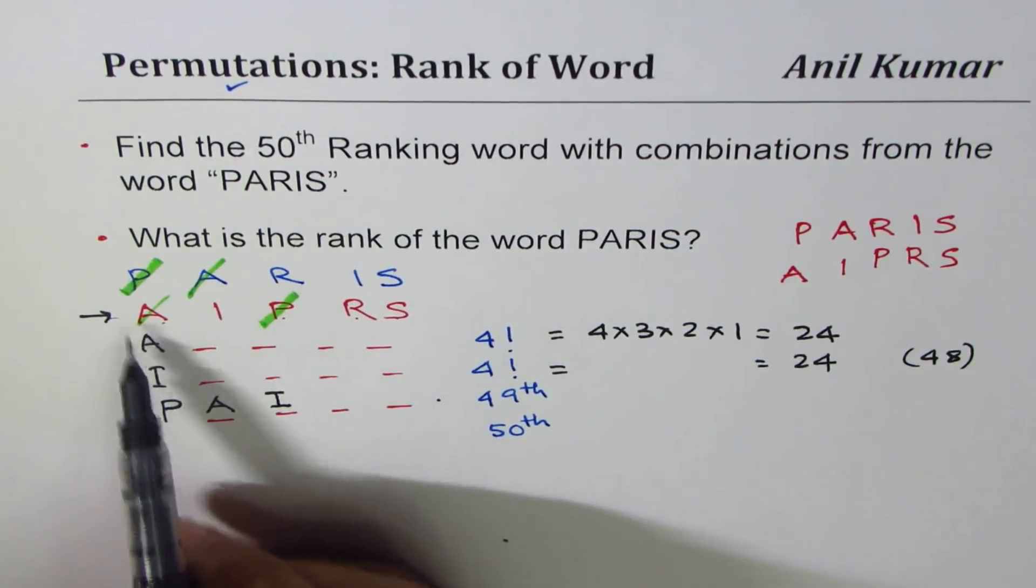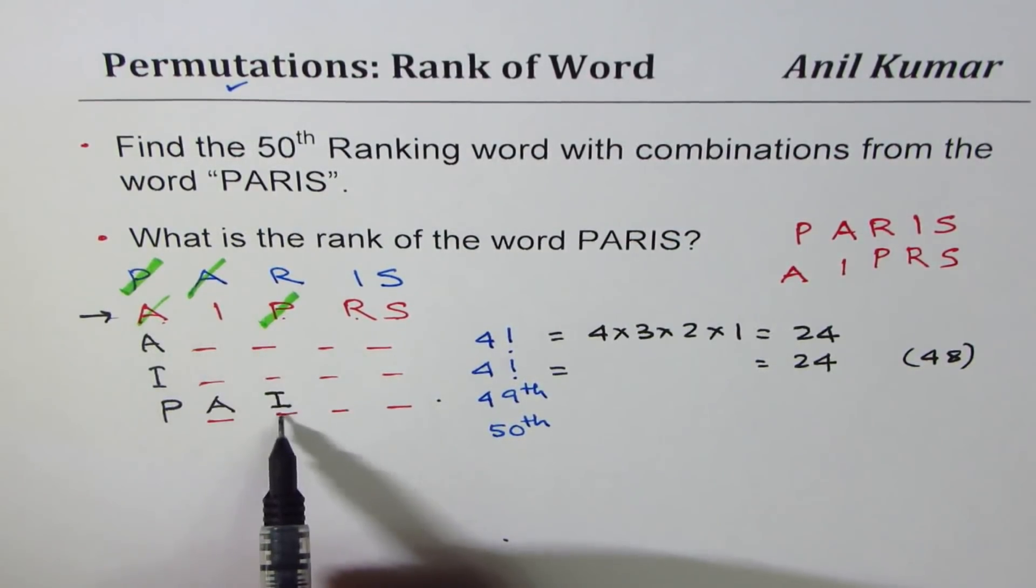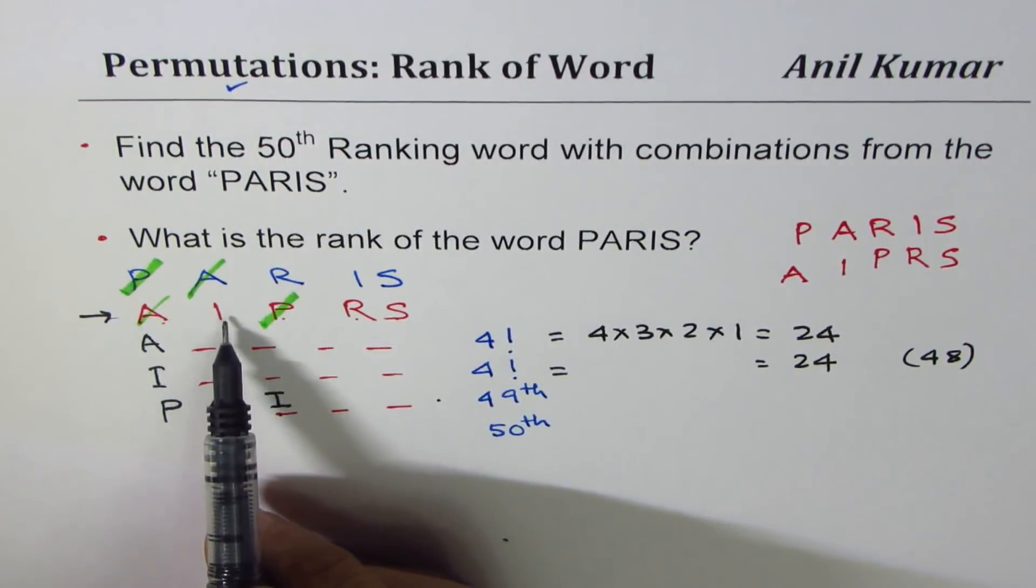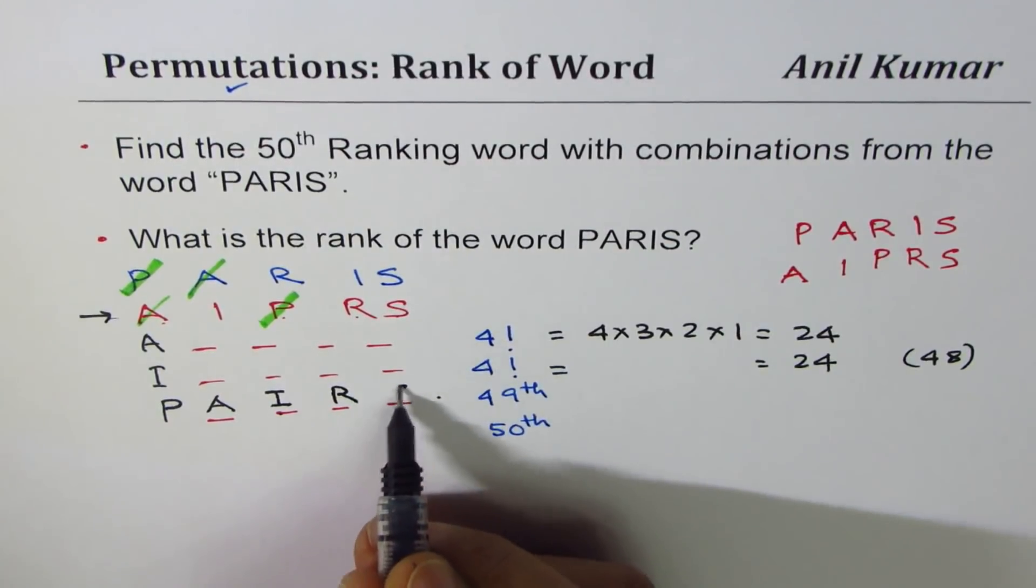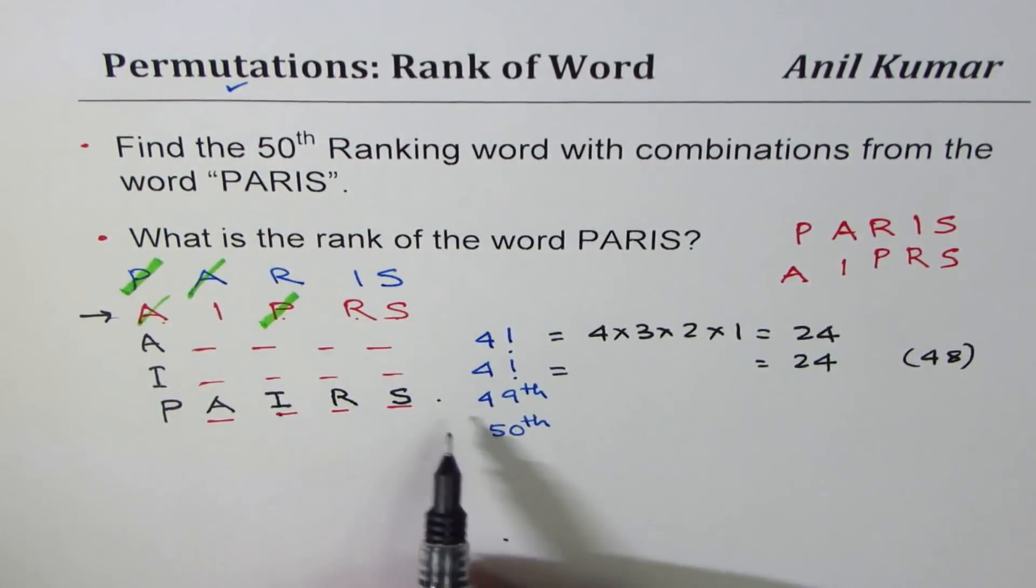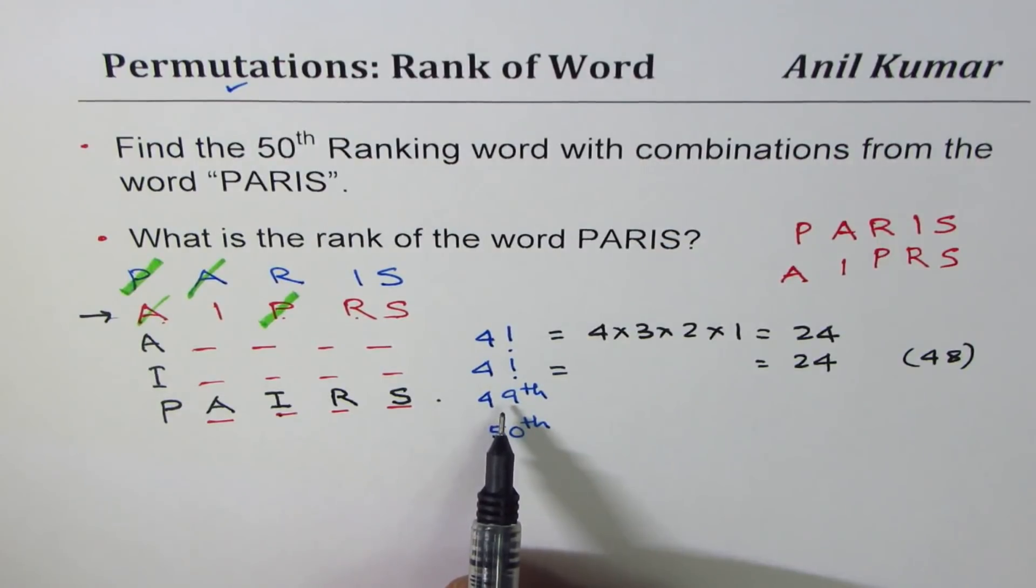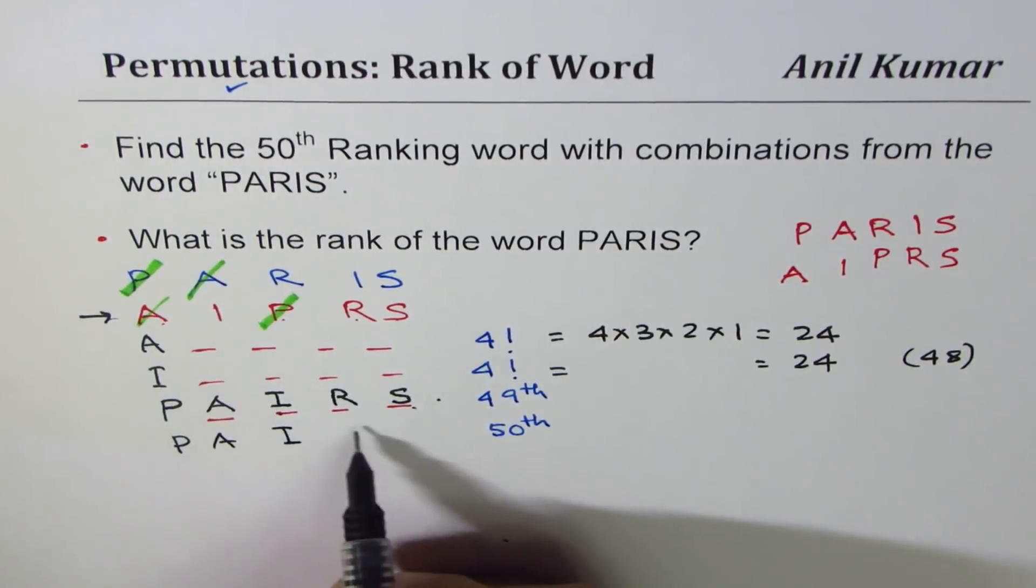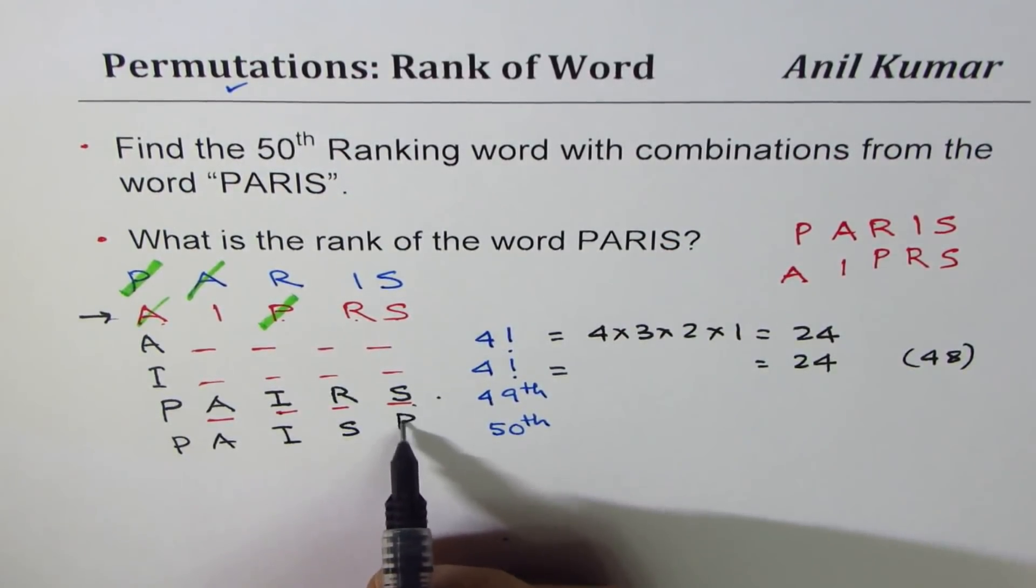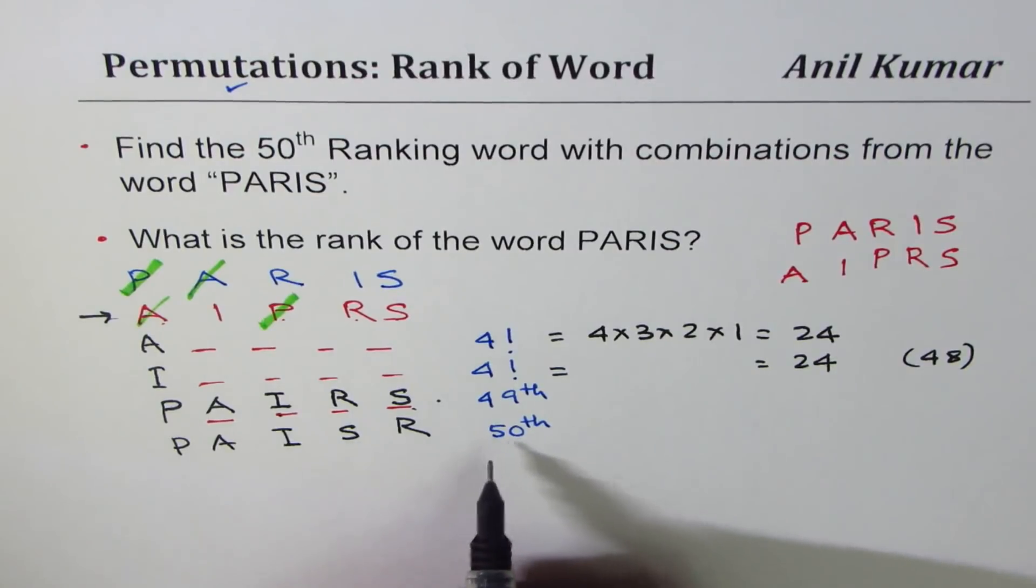So P, A. Next is I. It doesn't match, of course, but anyway, after I, we have to put R and then S. Now this becomes the 49th word. The next will be flip this position. So we have P, A, I, S, R. So P-A-I-S-R is the 50th word in our list.